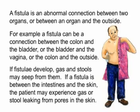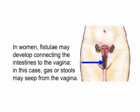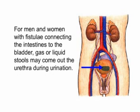For example, a fistula can be a connection between the colon and the bladder, or the bladder and the vagina, or the colon and the outside. If fistulae develop, gas and stools may seep from them. If a fistula is between the intestines and the skin, the patient may experience gas or stool leaking from the pores in the skin. In women, fistulae may develop connecting the intestines to the vagina, and gas or stools may seep from the vagina. For men and women with fistulae connecting the intestines to the bladder, gas or liquid stools may come out the urethra during urination.